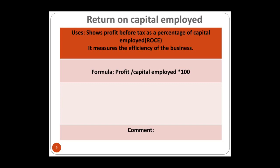Capital employed is the permanent capital — any money the business takes from the bank. On the balance sheet, capital employed equals total shareholder funds plus long-term liabilities. Return on capital employed measures the percentage of profit out of capital employed — essentially asking: how much profit did the business make out of the capital invested?